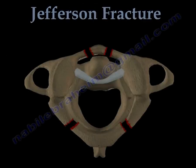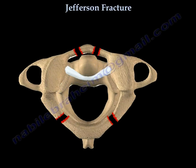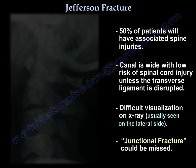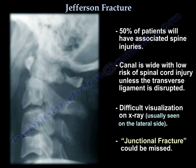Jefferson Fracture: 50% of patients with Jefferson Fracture will have associated spine injuries. The canal is wide with low risk of spinal cord injury unless the transverse ligament is disrupted. It is difficult to visualize the fracture on an X-ray — it is usually seen on the lateral X-ray of the C-spine. It is a junctional fracture, so it could be missed.